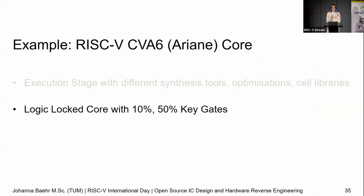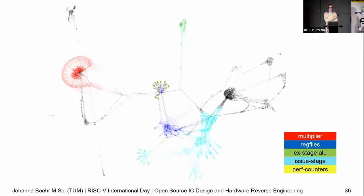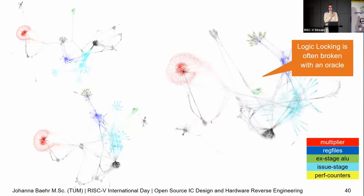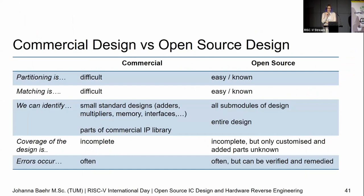We also did some countermeasures. Logic locking — the idea is you insert key gates, and if you don't have the right key the functionality is wrong. Maybe a multiplier has 10 key gates: without the right key it doesn't multiply, it does something completely different. We did this with 10% and 50% key gates, randomly distributed, meaning 10,000 or 50,000 more gates. Our original, the 10% version, the 50% version, and the comparisons — I think everyone here can see it's still the same thing. If I was asked what that locked design is, I'd look at my implementation and say yeah, it's probably the CVA6. Pretty sure, visually — and that's five minutes of work. Logic locking is very often broken when we have an oracle, and in the open source use case we very often do have the oracle — we can download it.